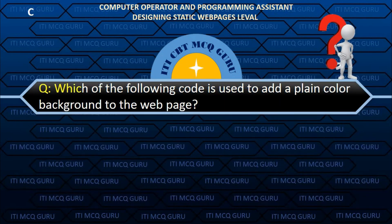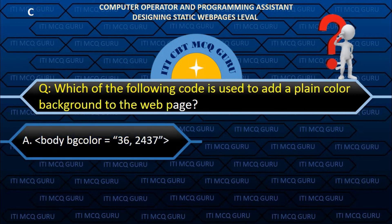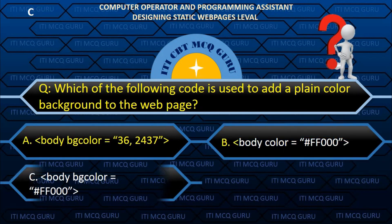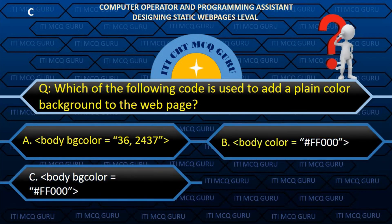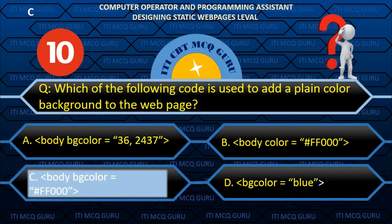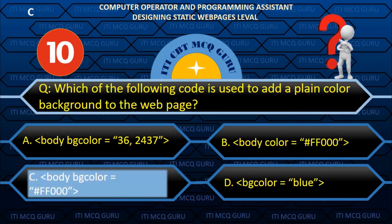Which of the following code is used to add a plain color background to the web page? C. body bgcolor equals #FF0000.